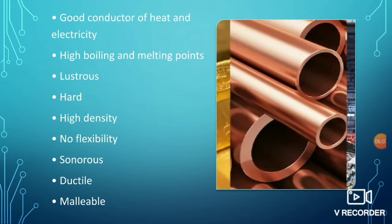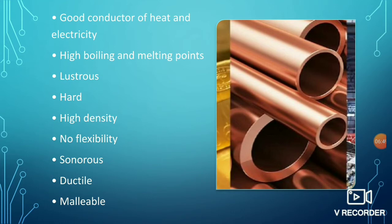Metals are good conductors of heat and electricity. That is why pots, pans, and vessels are made of metals — they conduct heat well for cooking. Metals are also good conductors of electricity because of the free-moving electrons present in them. For example, copper is used as wiring because it is a good conductor of electricity.